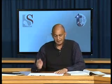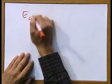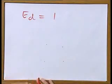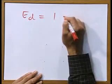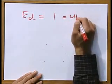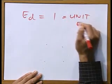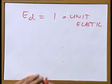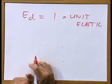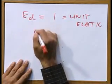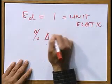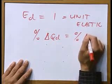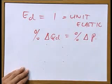The last category is when ED is equal to 1. When ED is equal to 1, then we say it's unit elastic. When the demand is unit elastic, it means that the percentage change in the quantity demanded is equal to the percentage change in the price of the product. That is why it's equal to 1.